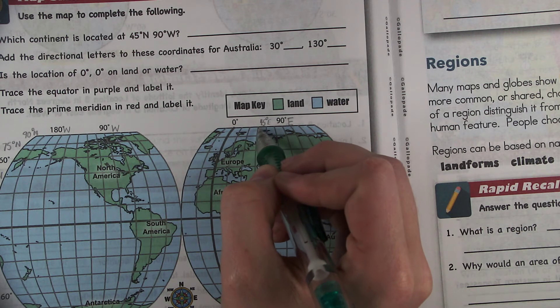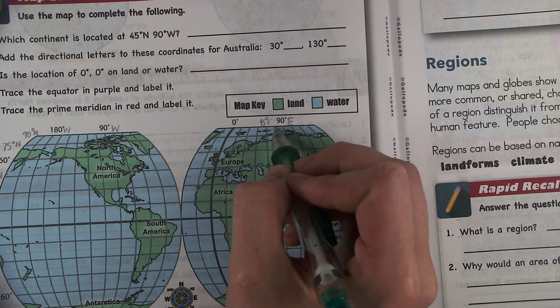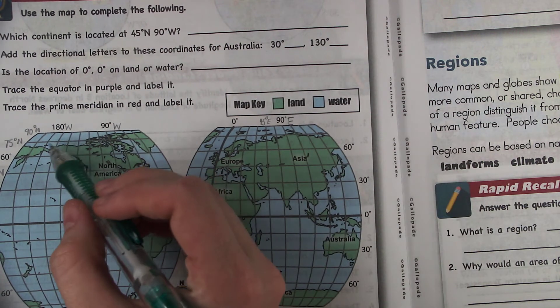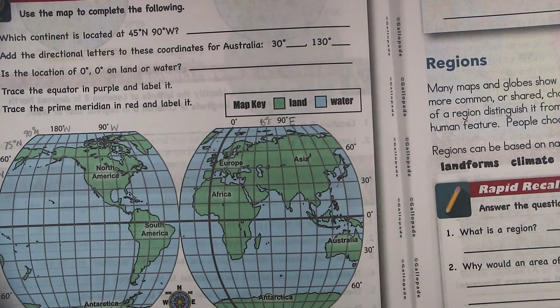45, 60, 75, 90. We keep going. And then right there we have 180 degrees.